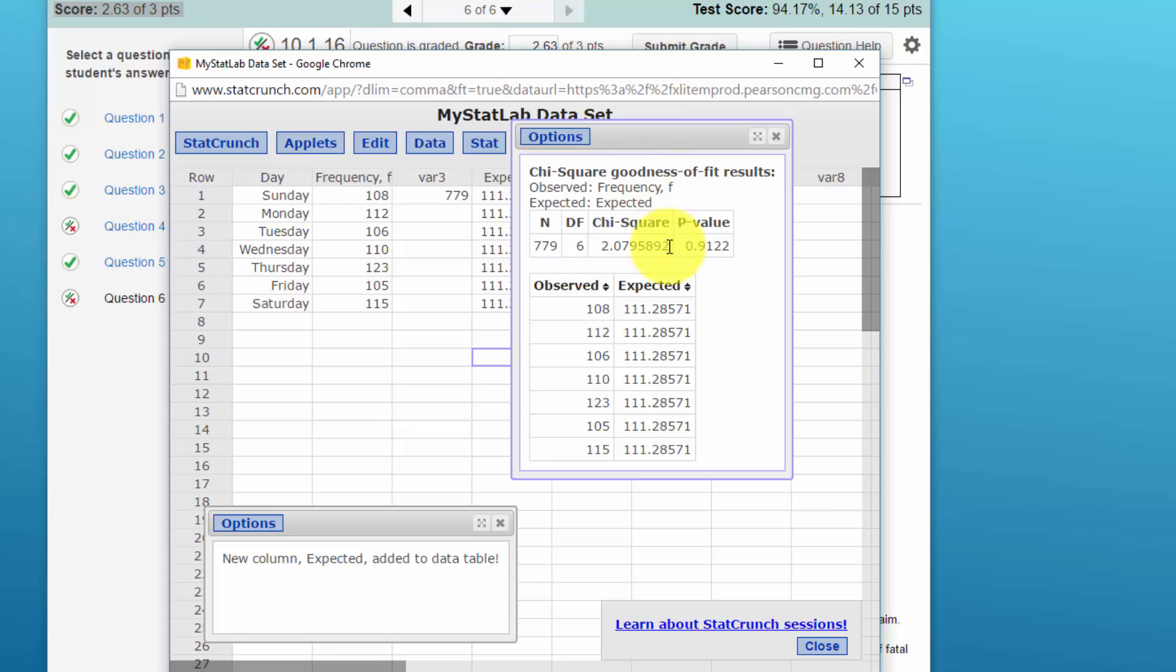And we get a table showing our observed and expected. We get a test statistic of 2.079 and a p value of 0.9, which tells us that we do not reject the null hypothesis.